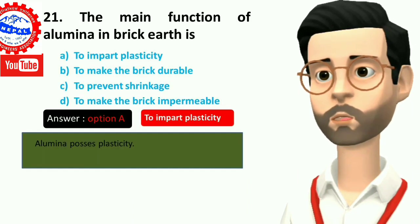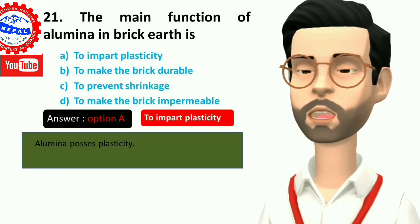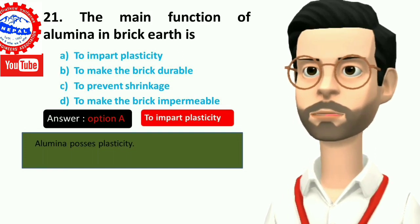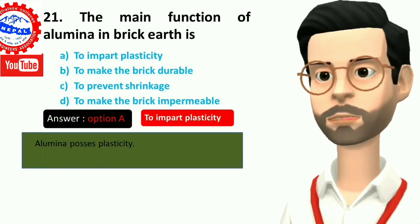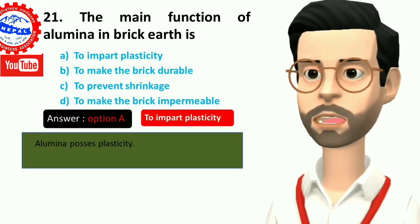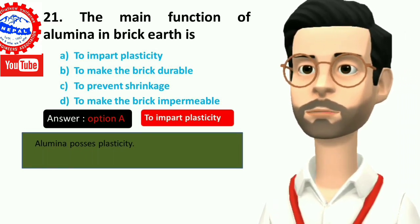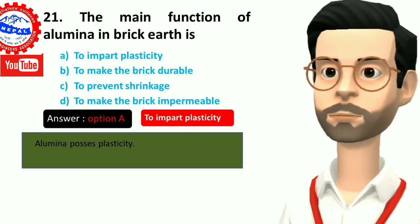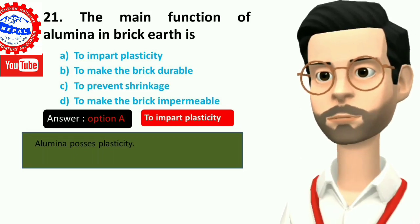Twenty-one, the main function of alumina in brick earth is: A) to impart plasticity, B) to make the brick durable, C) to prevent shrinkage, D) to make the brick impermeable. Alumina possesses plasticity. Answer is option A, to impart plasticity.